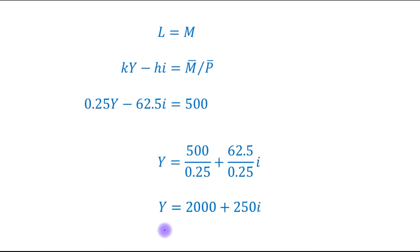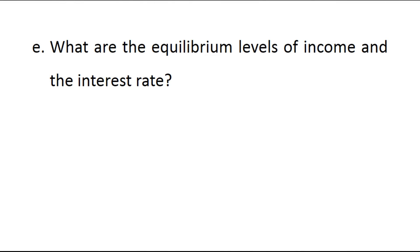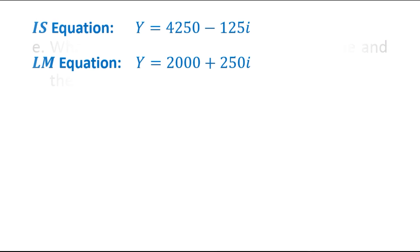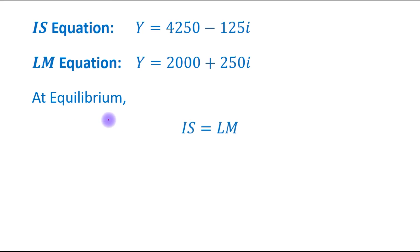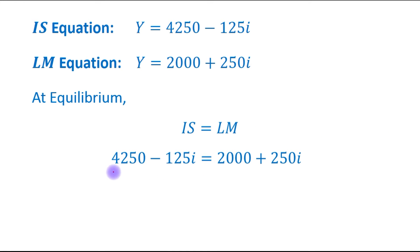Finally, this is our LM curve — this is the equation that represents the LM curve. For part E, we need to find the equilibrium levels of income and interest rate. We have derived the IS equation and LM equation. At equilibrium, IS equals LM, meaning the goods market and the money market are simultaneously in equilibrium.